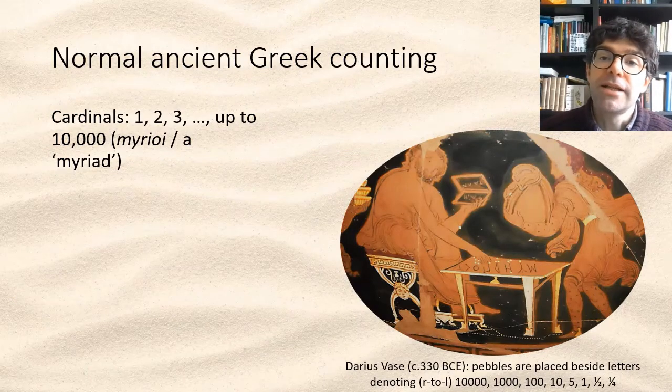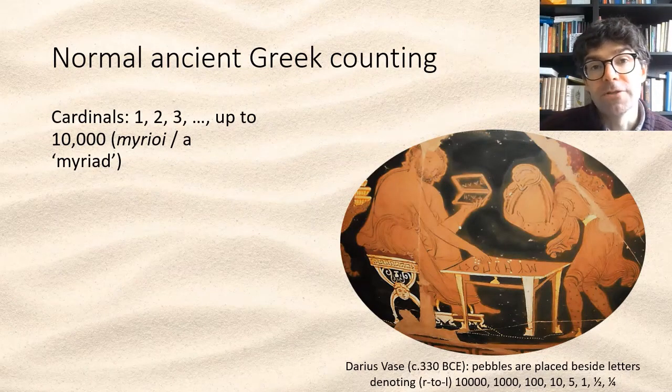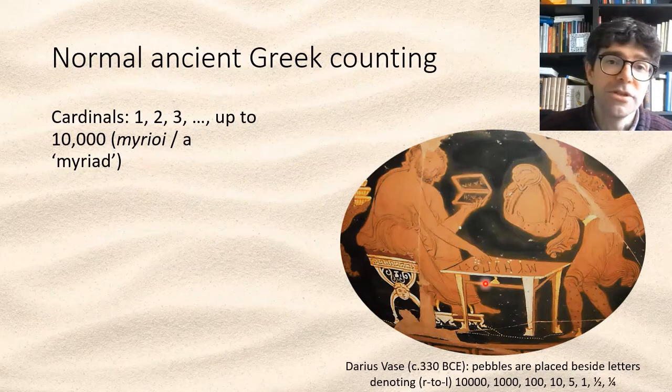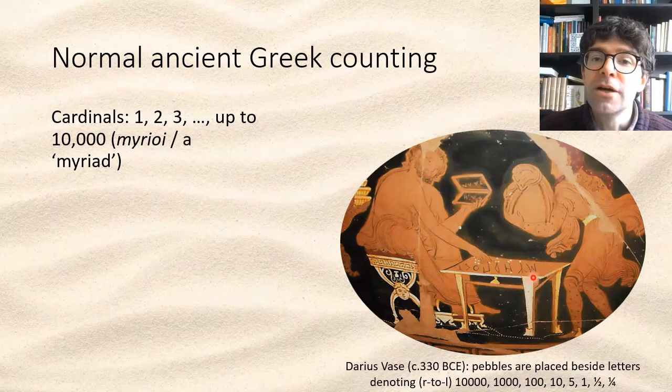Archimedes starts from the fact that the Greek language had words for a hundred, a thousand, and ten thousand, that's a myriad, but it didn't go beyond this. We see this in ancient counting boards, and in this case a painting of one, where M for myriad is the highest column.